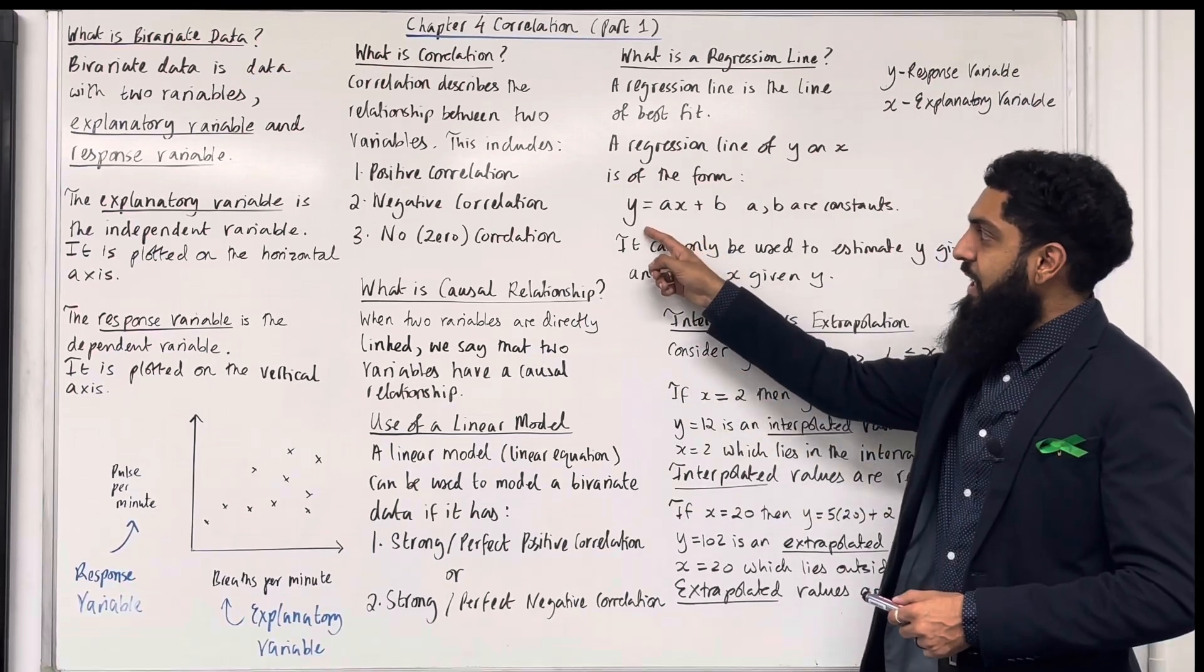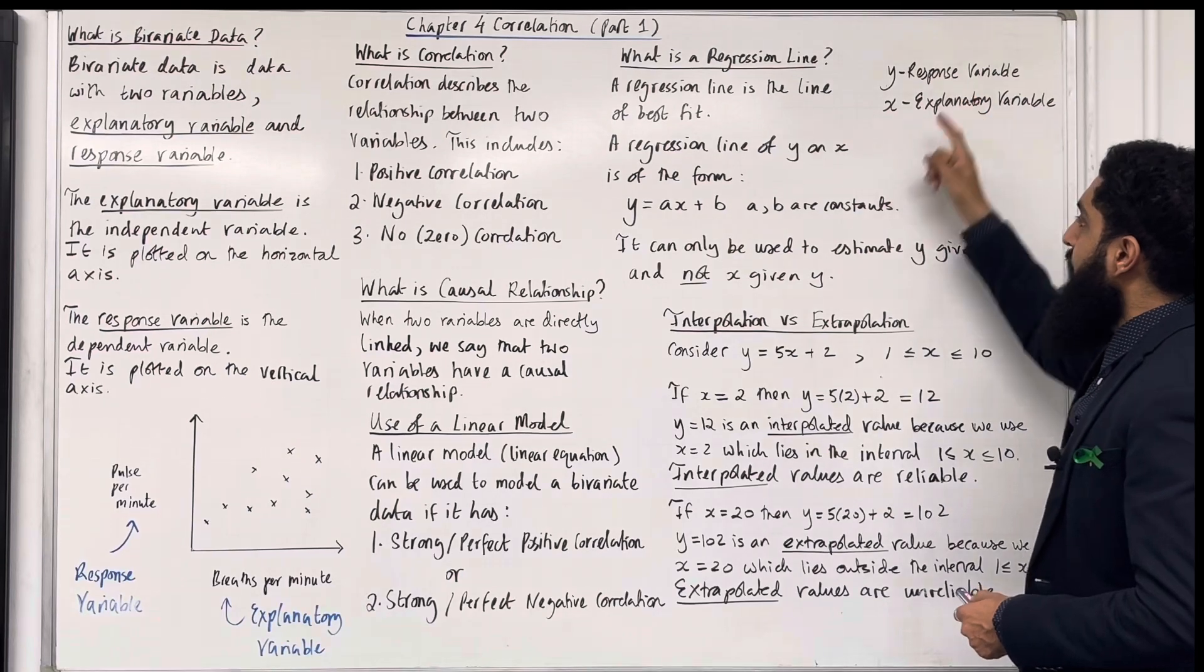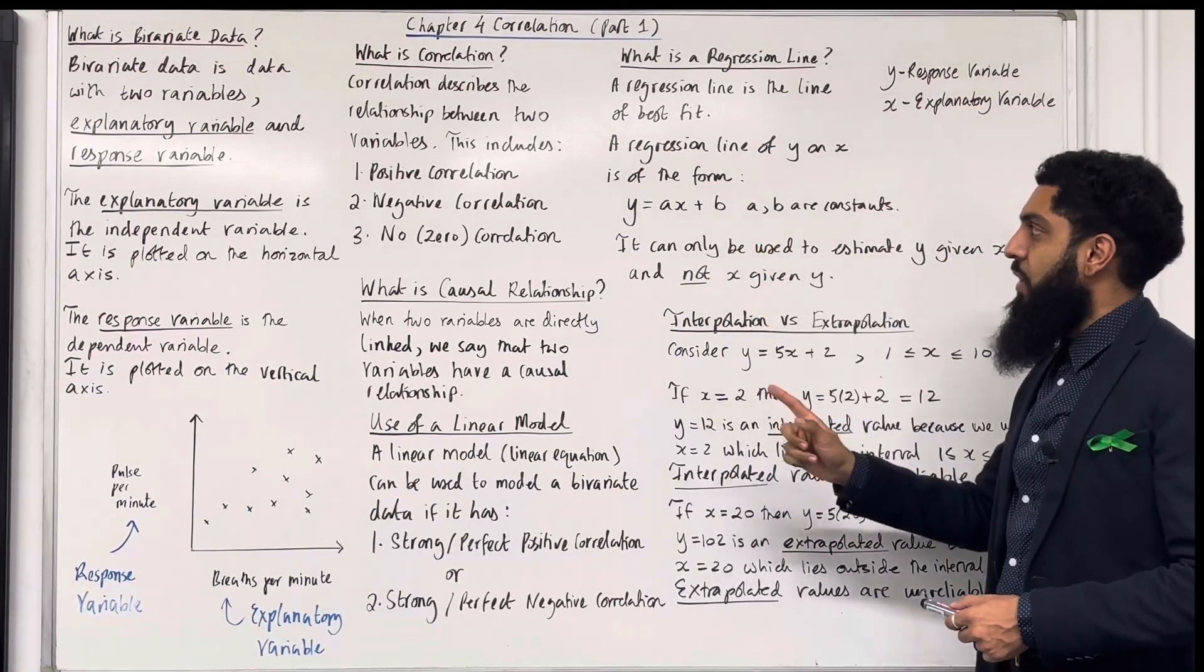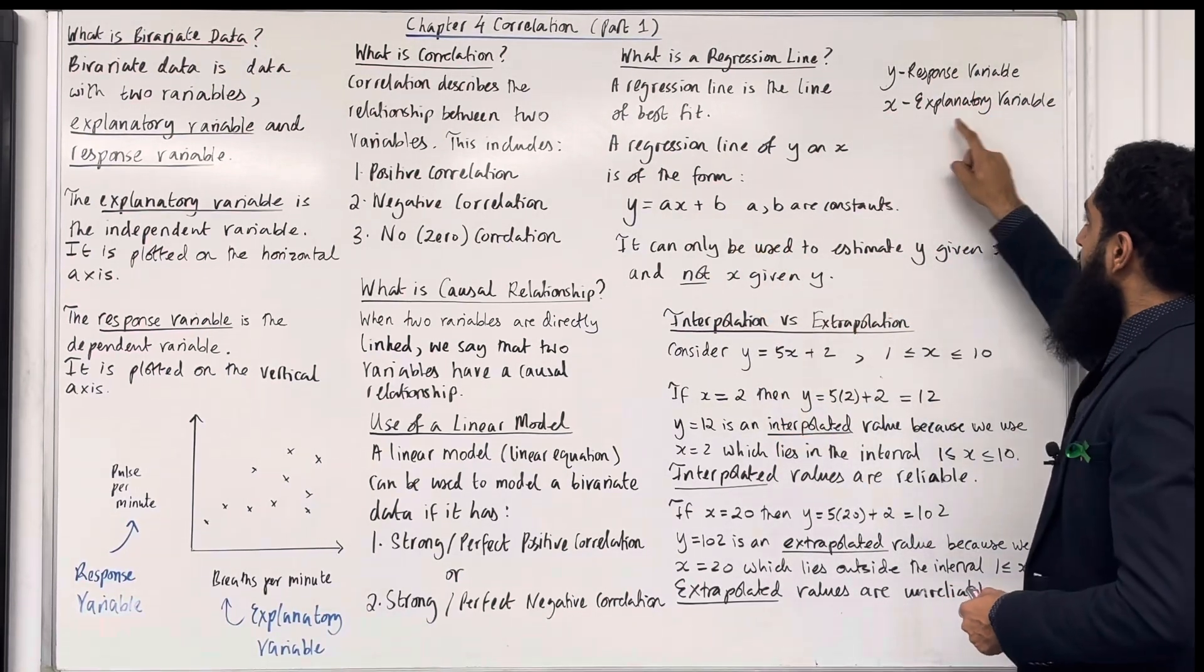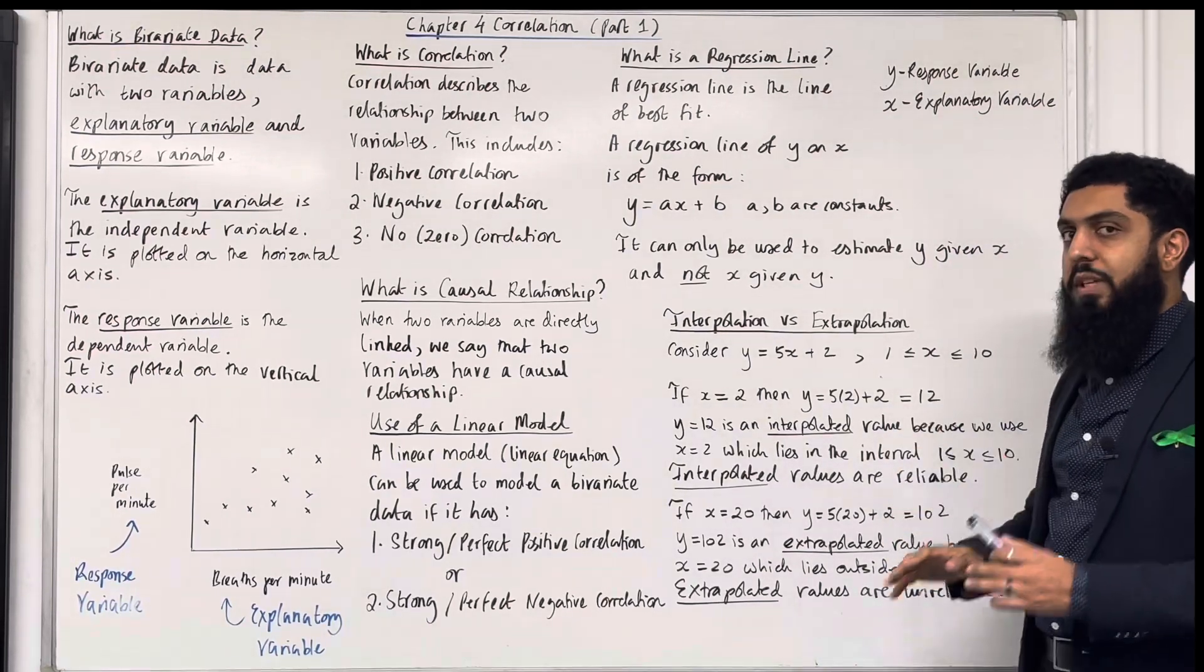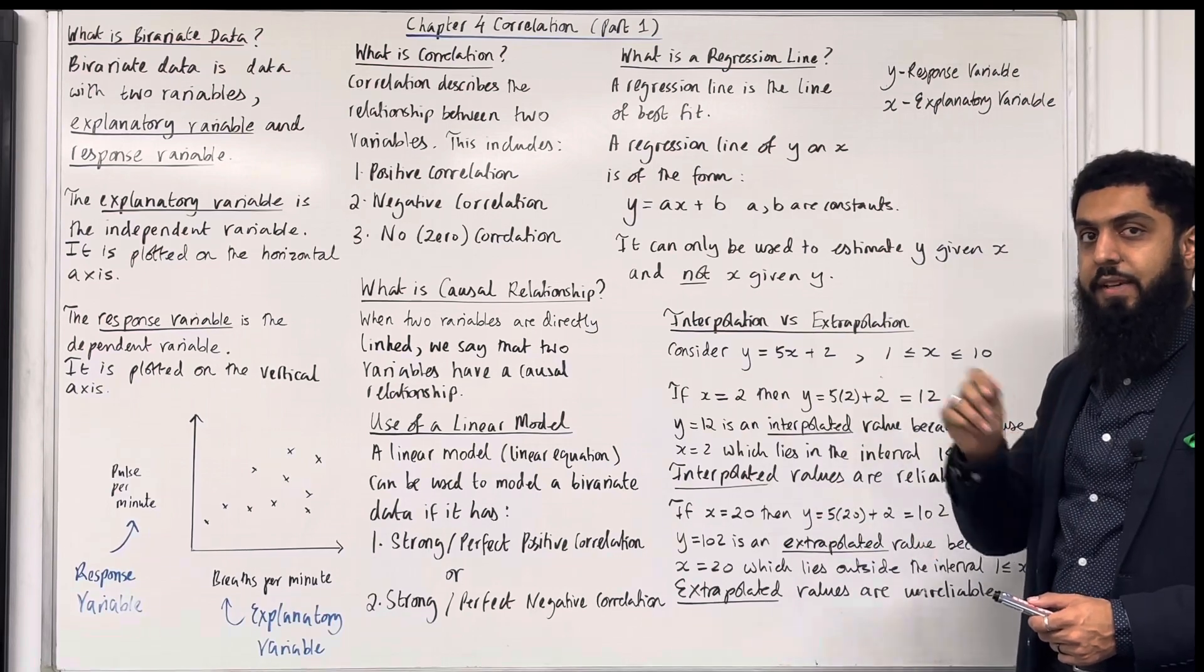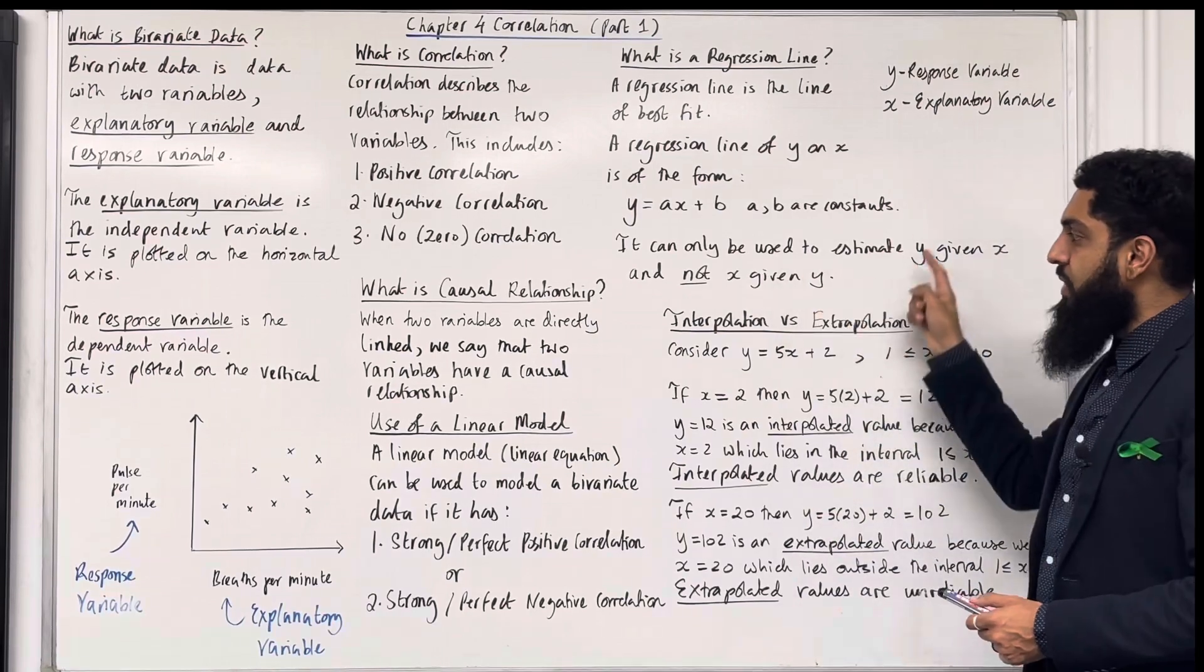Now, y is the dependent variable, so we call the dependent variable the response variable. x is the independent variable, we call the independent variable the explanatory variable. The regression line of y on x can only be used to estimate y given x, and not x given y. So that is a very important fact.